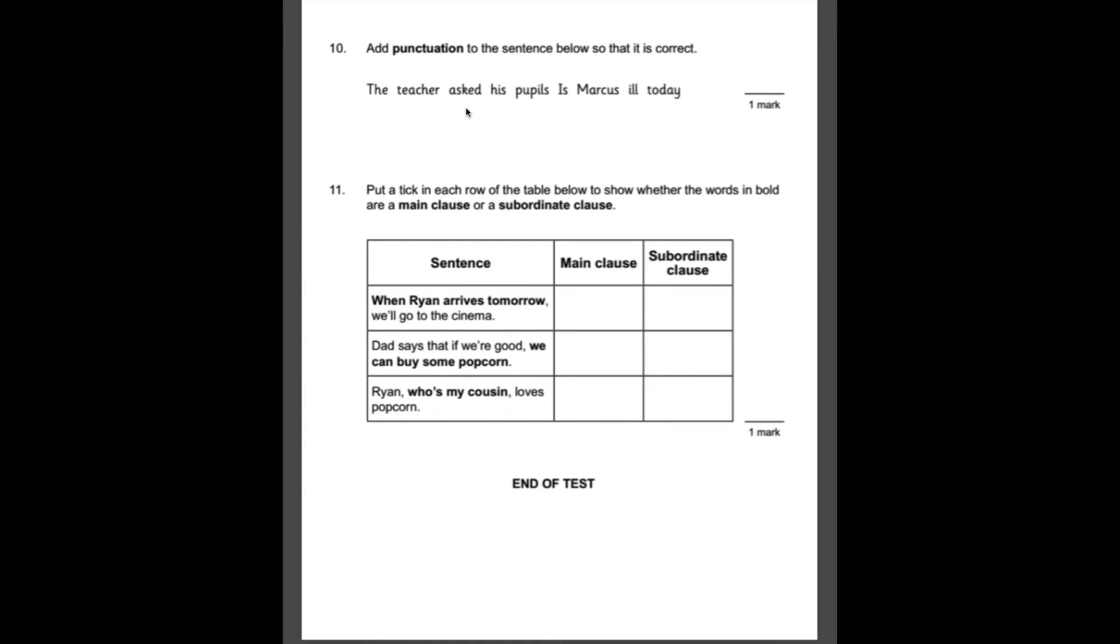Number 10, add punctuation to the sentence below so that it's correct. In this case, it looks like we're going to have to use some direct speech. So the teacher asked his pupils. Before we start any speech, we always have a comma. So that goes there. The teacher asked his pupils. We then start with inverted commas. Is Marcus ill today? What sort of sentence is that? It's a question. So we need a question mark at the end. And then finally, we need to close our inverted commas. So remember, before you start the speech, you always need a comma. We need to start and end with inverted commas in the actual bit that's spoken. And you'll also need some punctuation in the inverted commas. And because it's a question, we need a question mark.